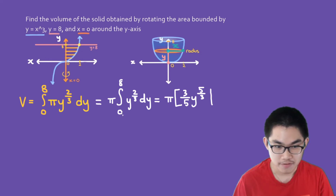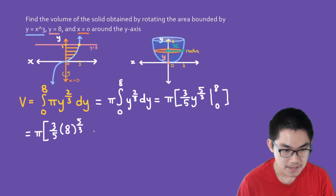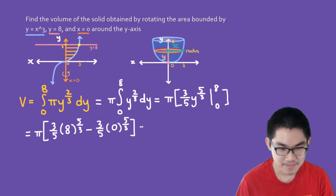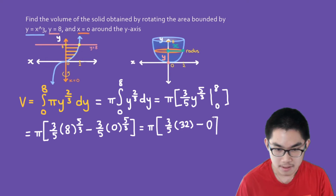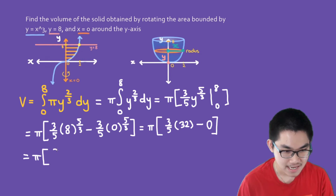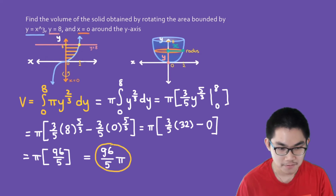Don't forget the boundaries — evaluated from 0 to 8. Substituting in the limits gives pi times 3/5 times 8 to the power of 5/3, minus 3/5 times 0 to the power of 5/3. Evaluating 8 to the 5/3 gives 32, and the lower bound is 0. So this becomes pi times 3/5 times 32, which equals pi times 96/5. The answer is 96π/5, which represents the volume of this solid.